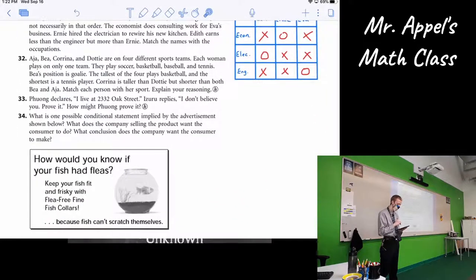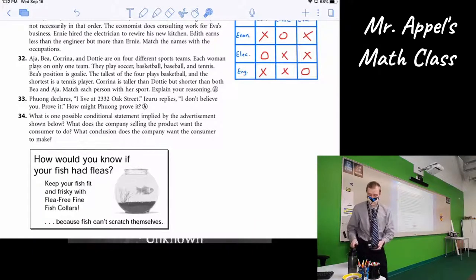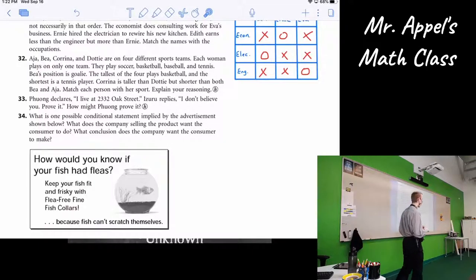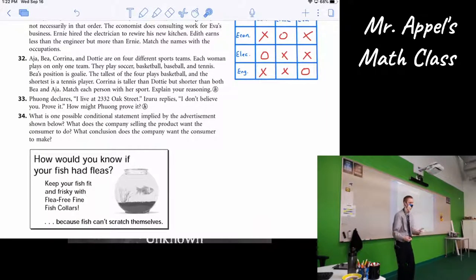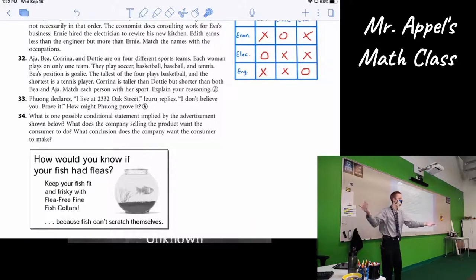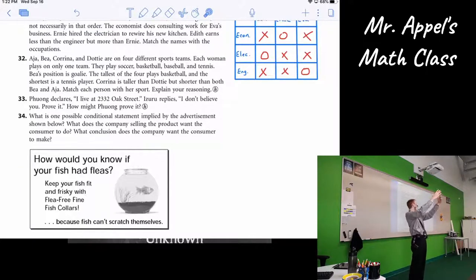Fong declares, I live at 2332 Oak Street. Izuru replies, I don't believe you. Prove it. How could he do that? What is one way he could show Izuru, I definitely live here? There's a lot of answers here, and we'll unpack some of them. What did you say? He could invite them over, right? Hey, I live here. Just come to the house. I will show it to you. This is where I live. Now, would it be enough to drive up to the house, get out, stand on the sidewalk, and look at it, and be like, look, see? 2332 Oak Street, this is my home. Would that convince him? No.